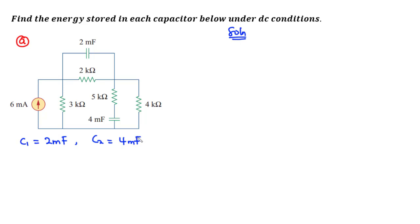One very important thing we need to take notice of is the fact that under DC conditions, a capacitor behaves as an open circuit. This is going to help us find the energy stored in the capacitor. We need to find the voltage across each capacitor, and to do that we are going to redraw the circuit and replace each capacitor with an open circuit.